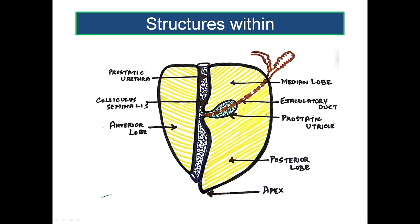It comes out through the anterior surface of the gland, anterosuperior to the apex — not through the apex itself but slightly anterior and superior to it — to become continuous with the membranous urethra. Another structure present within the prostate is the prostatic utricle, about 6 millimeters in length. It is a cul-de-sac, a blind-ending pouch protruding upwards and backwards from the prostatic urethra, posteriorly in the midline. The prostatic utricle is used as a landmark to demarcate the median lobe.